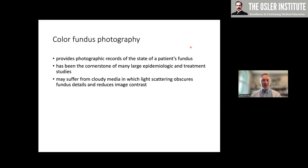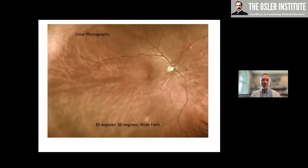You'll have issues if you have cloudy media and things that scatter light — those are some of the complications, things that reduce contrast in images. Those are going to be some of the challenges you'll deal with in color photographs. If you have a normal, straightforward eye, you can have very narrowed pictures or wide-field pictures. There are lots of different modalities for collecting images of the back of the eye. Here's an example of a wide-field photo.